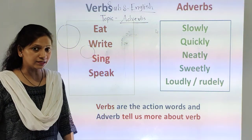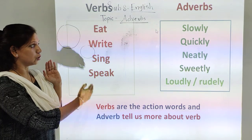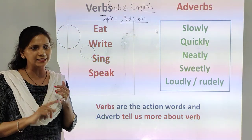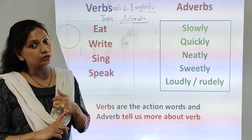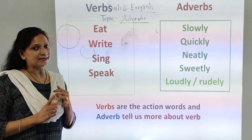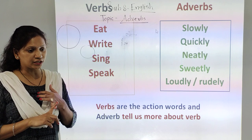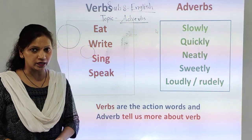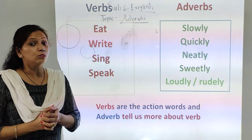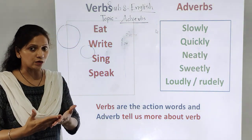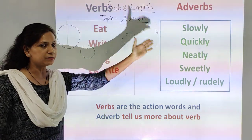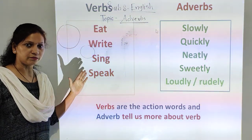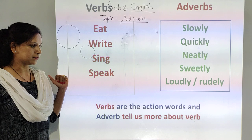What do adverbs do here? Adverbs tell more about the action words, just as adjectives do. We have learnt adjectives. What does an adjective do? Adjective tells more about the noun. So adjective tells more information about nouns, and adverbs tells more information about action words — verbs.